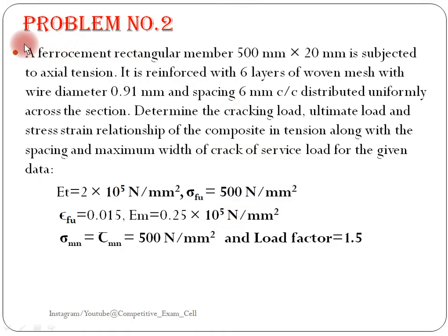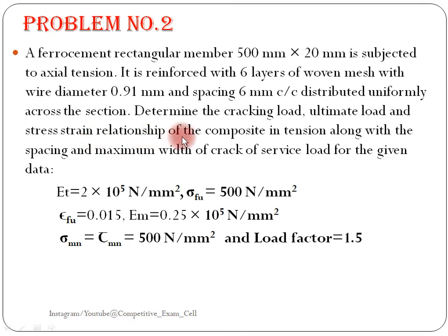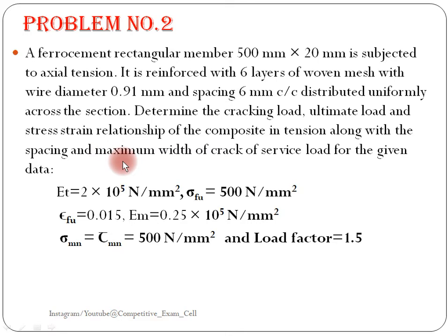The second problem: a ferrocement rectangular member 500 mm by 20 mm is subjected to axial tension. It is reinforced by 6 layers of woven mesh with wire diameter 0.91 mm and spacing 6 mm center to center, distributed uniformly across the section. Determine: (1) cracking load, (2) ultimate load, (3) stress-strain relationship of the composite in tension along with spacing, and (4) maximum width of crack at service load.